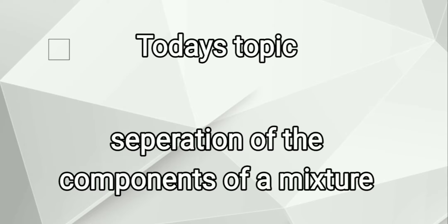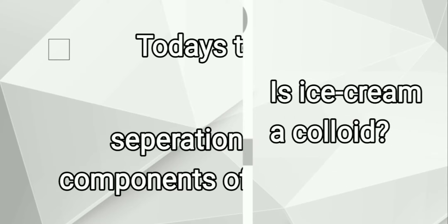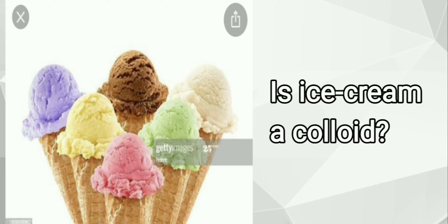Before entering today's topic, in the last class I showed you a picture and asked you a question: is ice cream a colloid? I hope you have been studying your textbook. The answer is yes — ice cream is a colloid because it's a complex substance containing solids like milk fats and milk proteins, water as a liquid, and air bubbles in gas form. In particular, ice cream is an example of an emulsion, which comes under colloids.